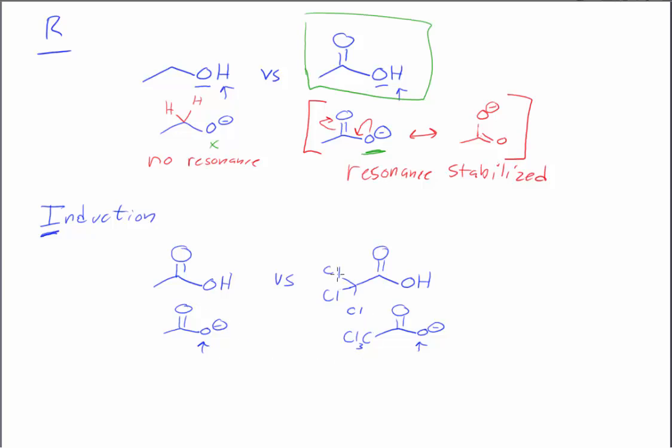So that leaves us with induction, then. There's three chlorines here. That has a dipole moment pulling electron density towards those chlorines. Anytime there's an electronegative element present, there's going to be a dipole moment with a partial negative charge on that electronegative element. So we're going to have this dipole moment present in trichloroacetic acid. There is no dipole moment present going in that direction for acetic acid.